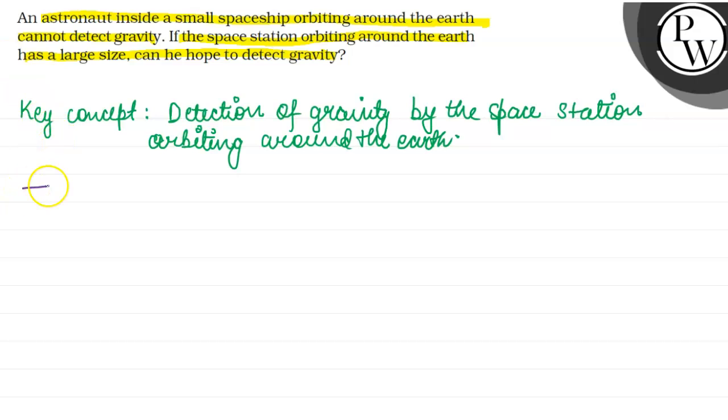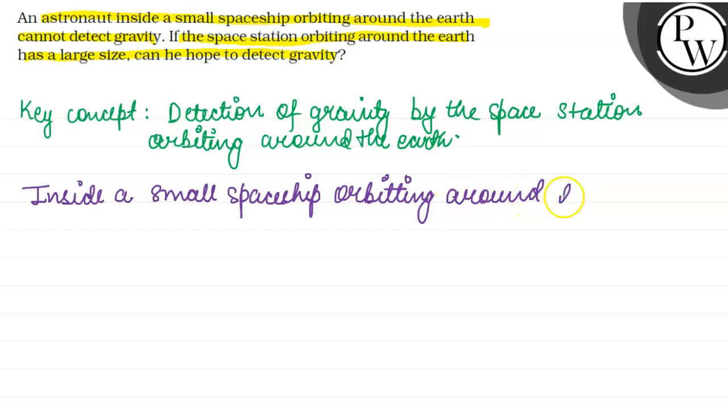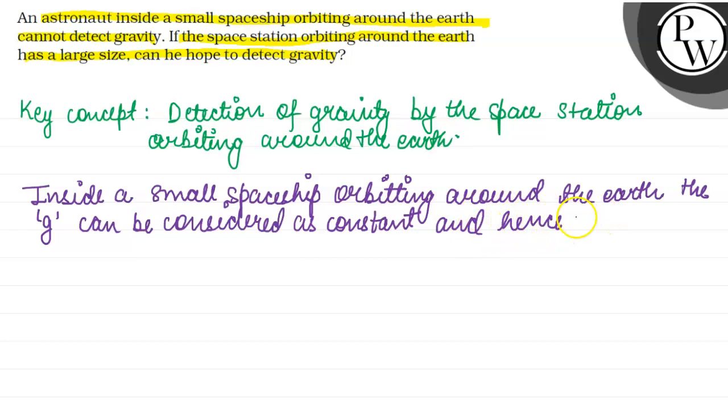Inside a small spaceship orbiting around the earth, the value of acceleration due to gravity, that is g, can be considered as constant, and hence astronaut feels weightlessness.